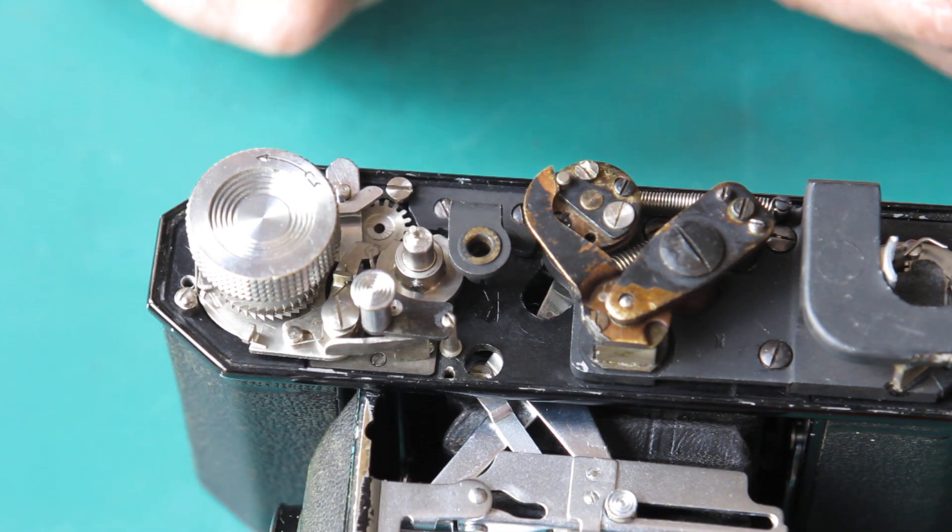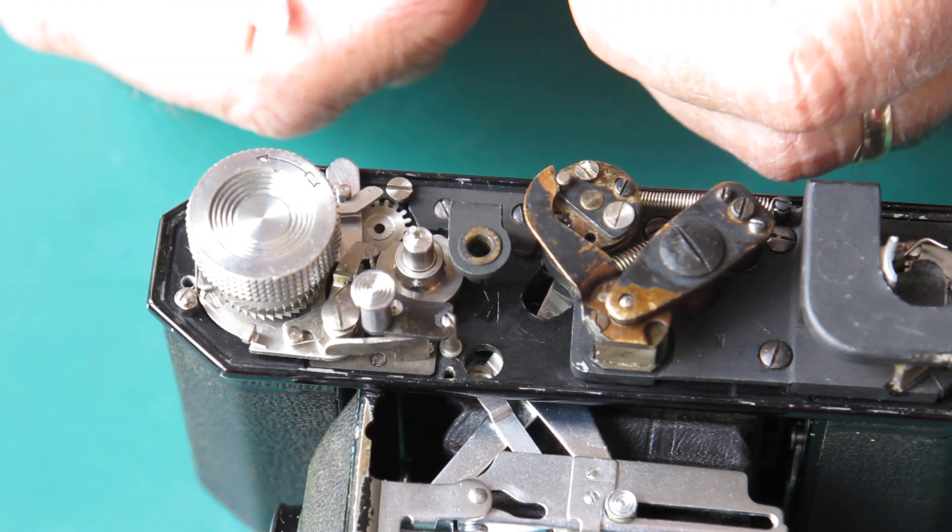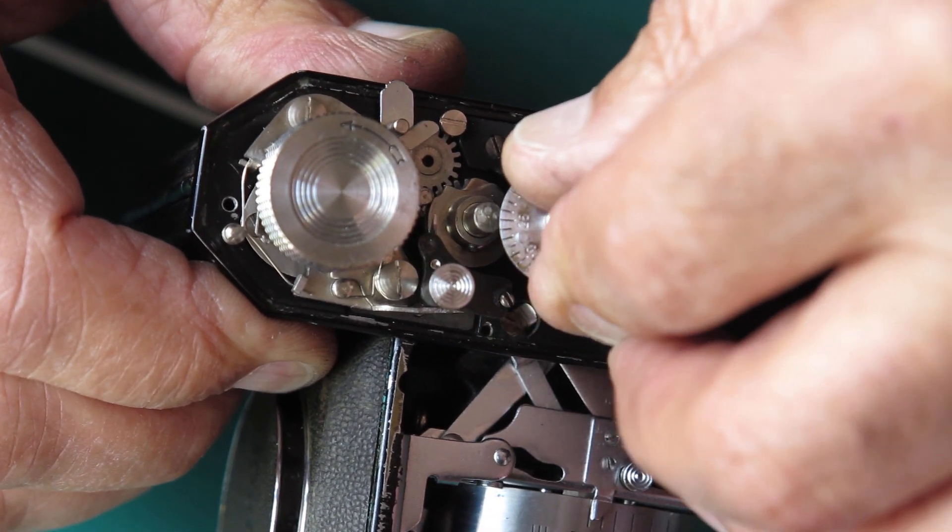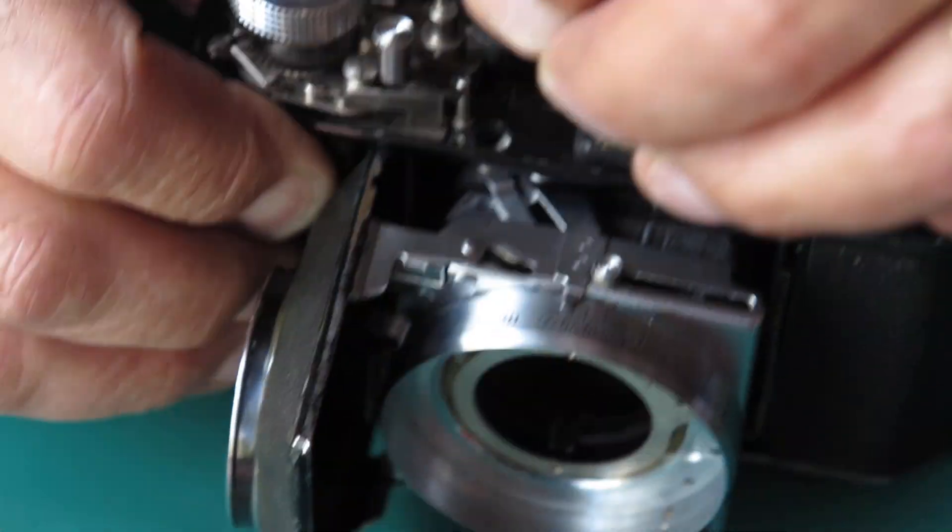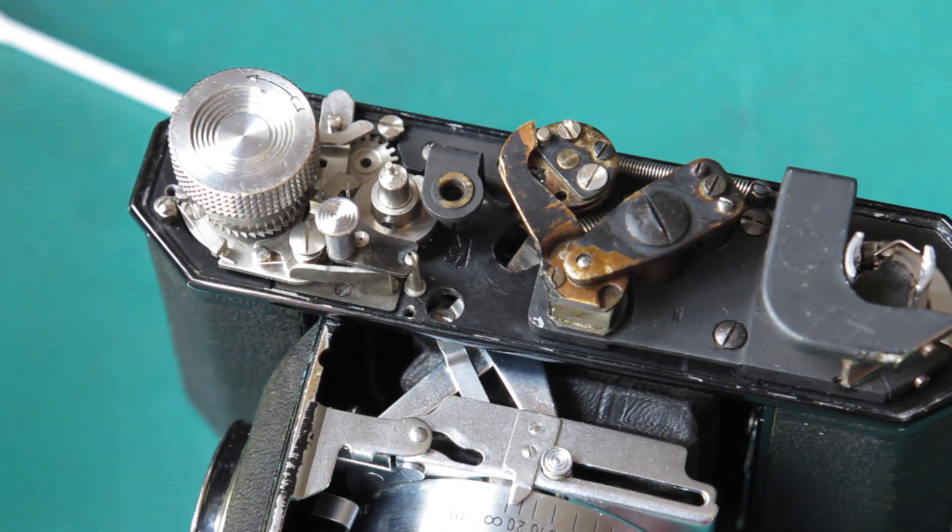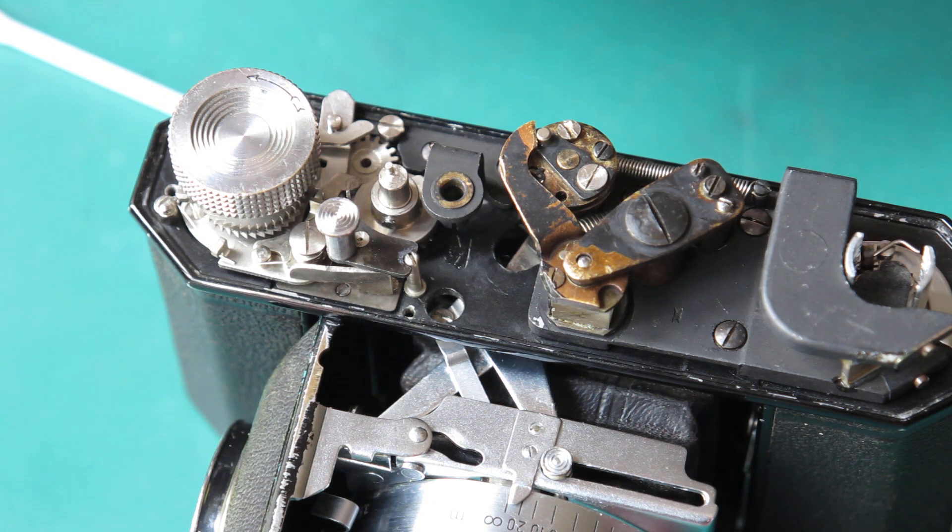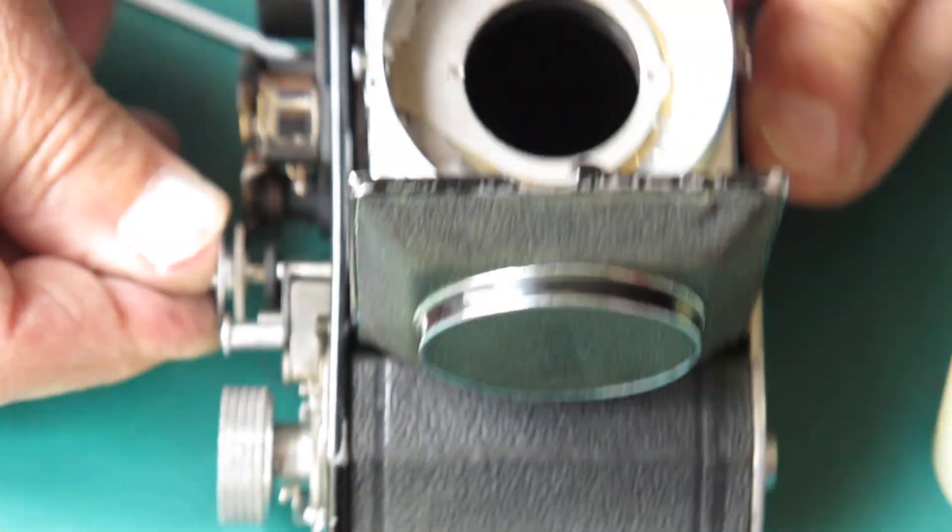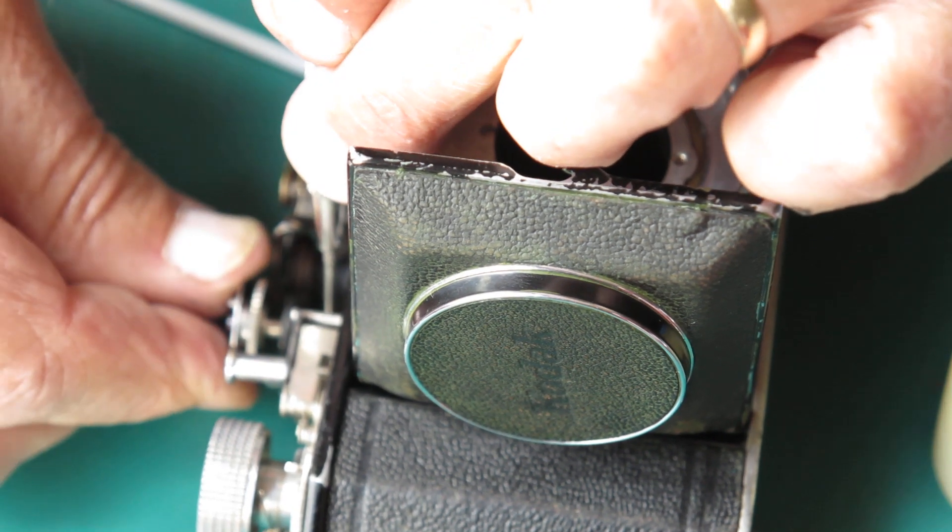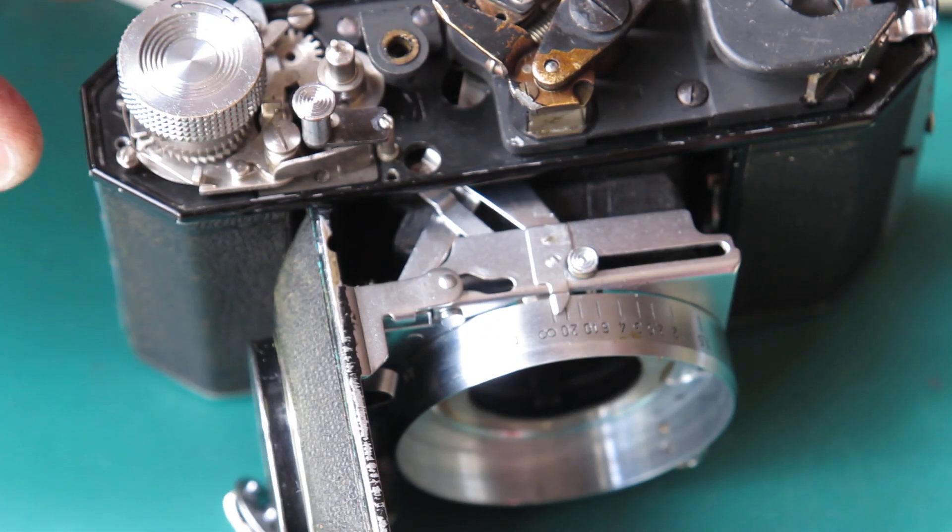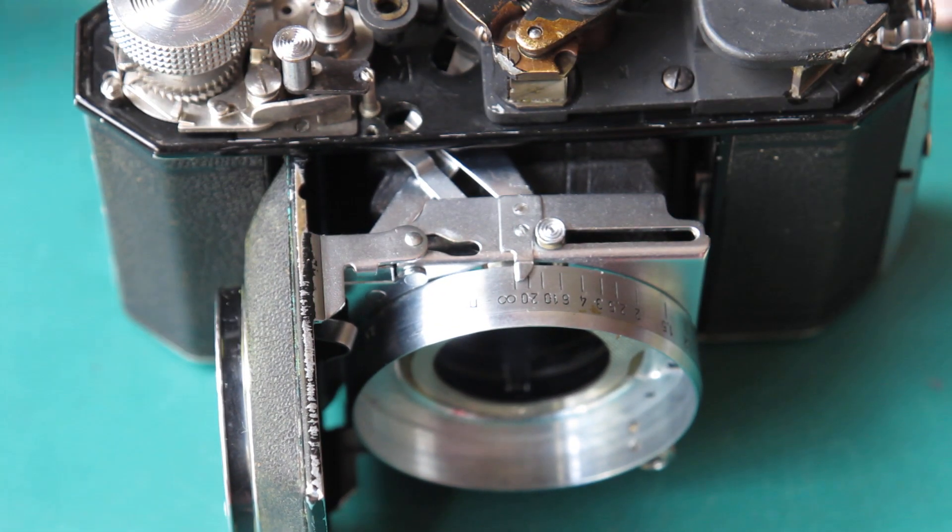Now the frame counter. It's chrome has certainly suffered in the wars. That doesn't want to go down in there either for some reason. Let's put a bit of synthetic grease on that shaft. It might just be very dry. That does not want to go in.